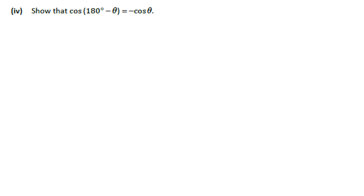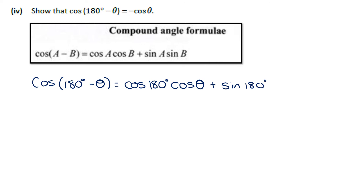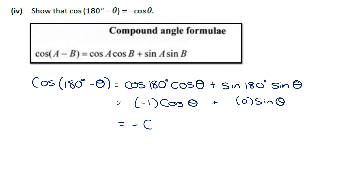Part 4 asks us to show that cos(180° − θ) = −cos θ. Going to the log tables page 14 for the compound angle identity: cos(A − B) = cos A·cos B + sin A·sin B. Substituting A = 180° and B = θ: cos 180°·cos θ + sin 180°·sin θ = −1·cos θ + 0·sin θ = −cos θ. QED.